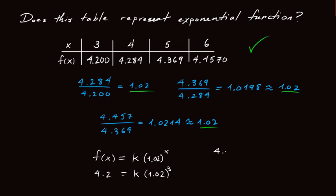So this is the same as saying 4.2 is equal to k times 1.061. And now I can solve for k. k is equal to 4.2 divided by 1.061. And I can plug that into my calculator. And I end up with 3.9577. So now I know k.